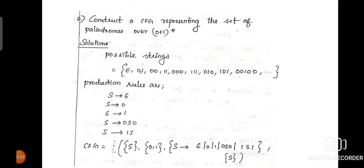Now, here is another example: write the CFG to represent the set of palindromes over (0+1)*. Based on the condition, our possible strings may contain 0 or 1 — any number of 0s or 1s. We write down the strings and identify the production rules. Our string may have any number of 0s and 1s, so we can have the production rules: S tends to 0S0, S tends to 1S1, S tends to 0 or 1, and S tends to epsilon. This is the production rule for the given language.